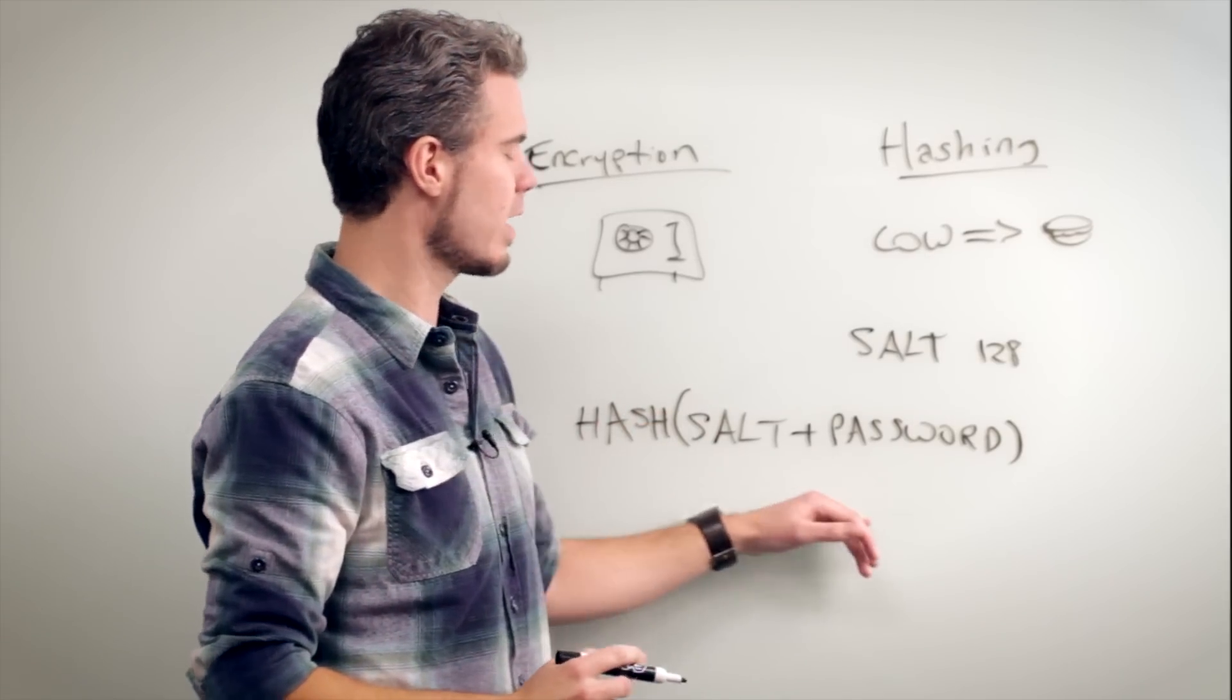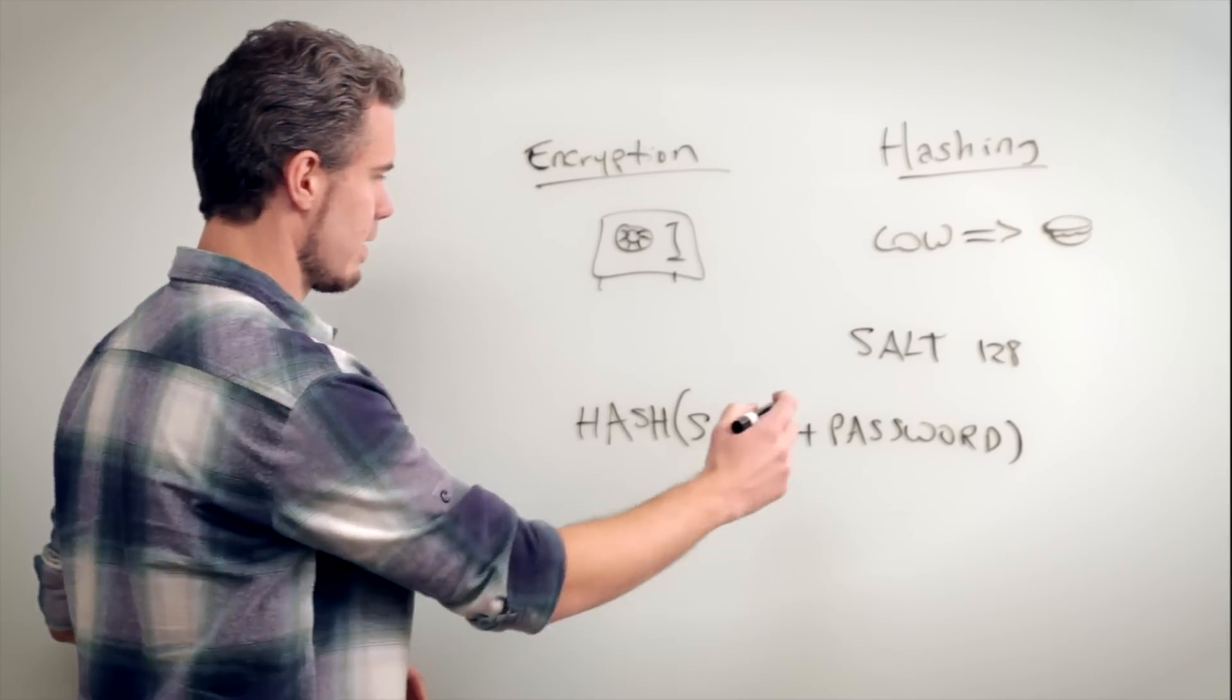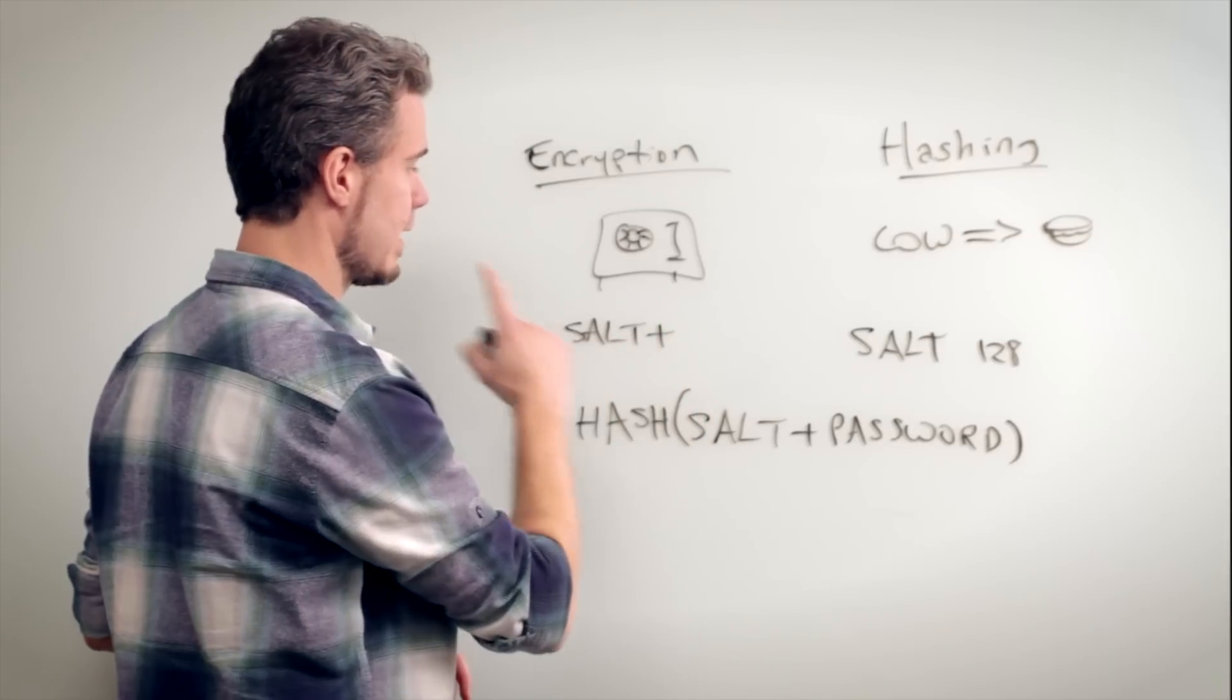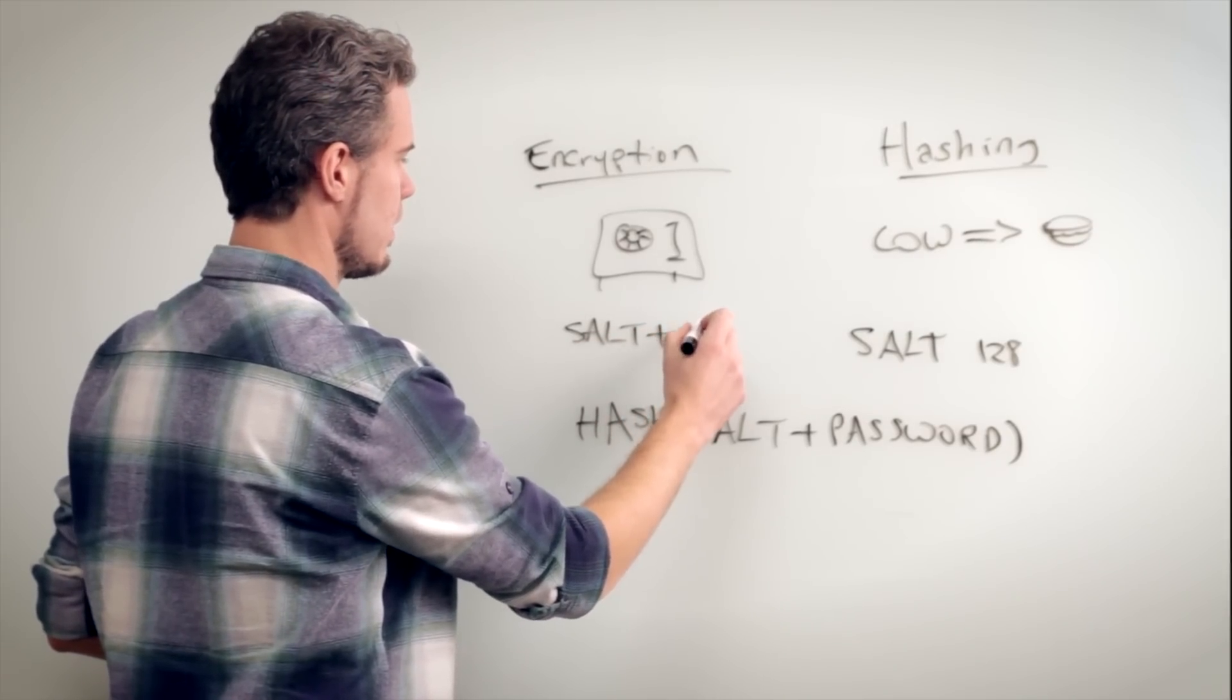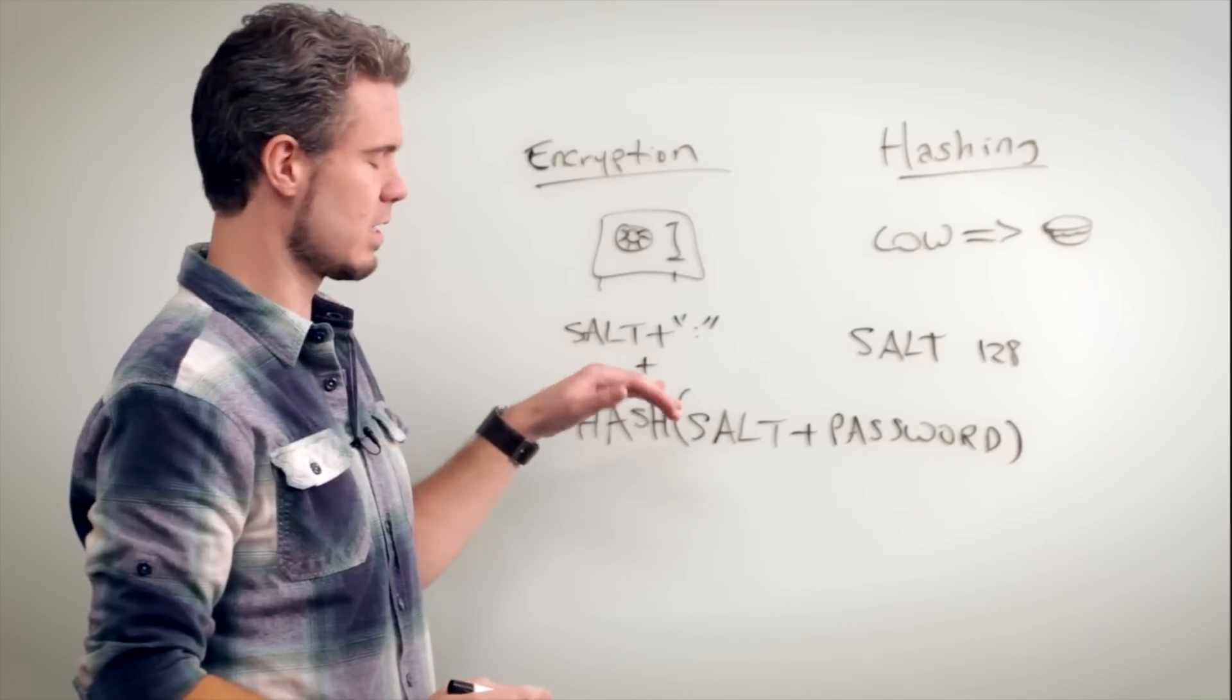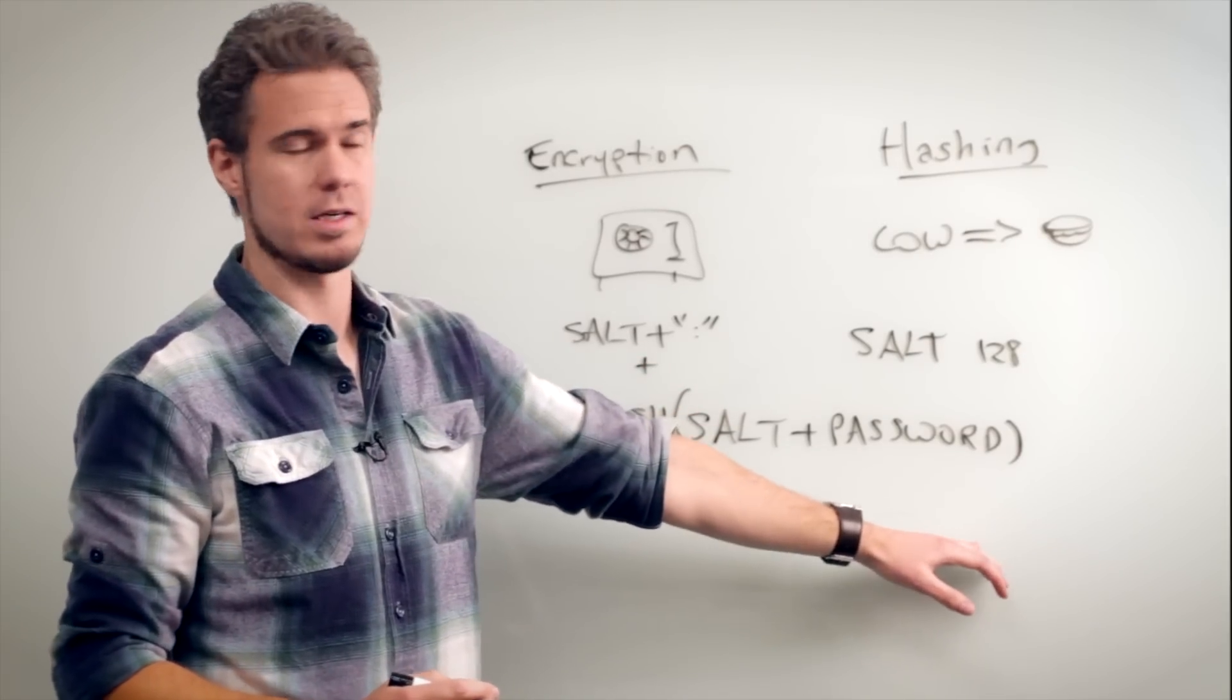So now you actually have a much longer password, and then you'll take this value and to that you will add the salt just in plain text, and usually with some kind of delimiter, so like a colon, and then you'll add that to the hash. So in the database it'll say salt, colon, and then the hashed salt plus password value.